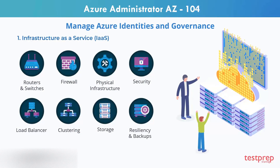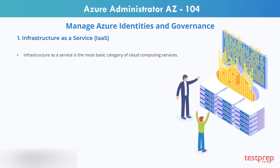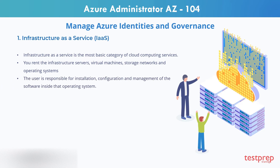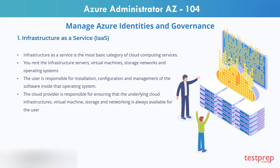The Infrastructure as a Service provider will supply a range of services to you, so you do not have to create that infrastructure on your premises. Infrastructure as a Service is the most basic category of cloud computing services. With IaaS, you rent the infrastructure — servers, virtual machines, storage networks, and operating systems. The user is responsible for installation, configuration, and management of the software inside the operating system, but the cloud provider ensures that the underlying cloud infrastructure, virtual machines, storage, and networking are always available.